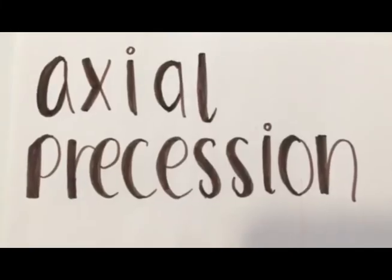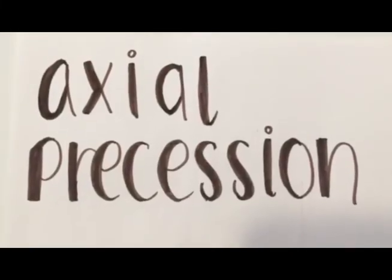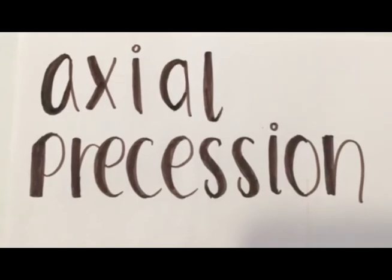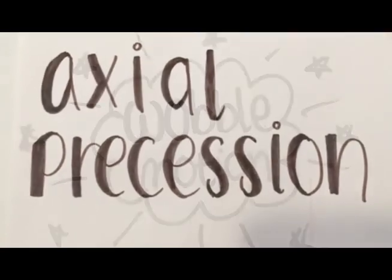Axial precession is the third measurement which helps understand planetary orbits. It is the change in orientation of a rotational axis in a rotational body. Basically, the wobble motion.